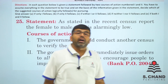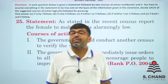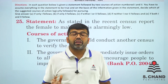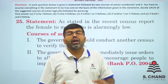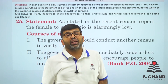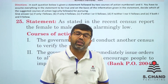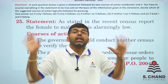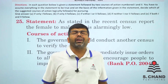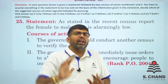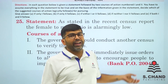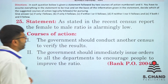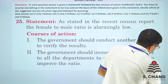Course of action II: 'The government should immediately issue orders to all departments to encourage people to improve the female-to-male ratio.' Given that issues like female foeticide are ongoing, every department needs to run awareness campaigns. Awareness campaigns are definitely needed. So only the second course of action is correct for question 25.